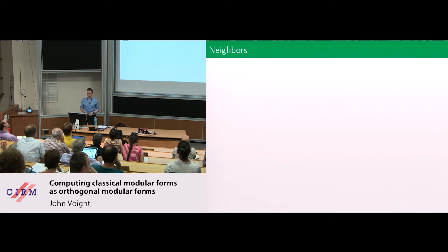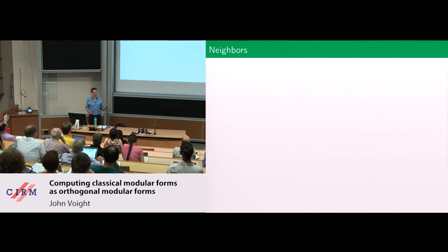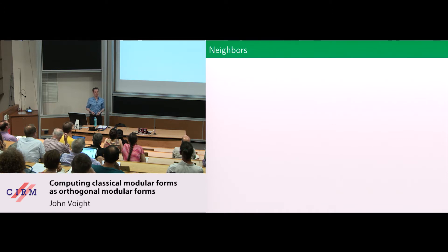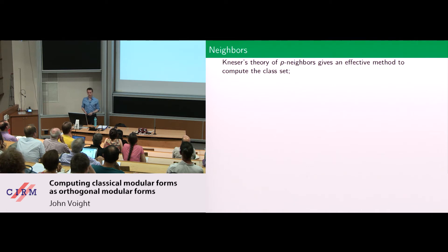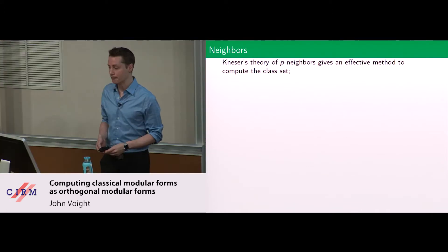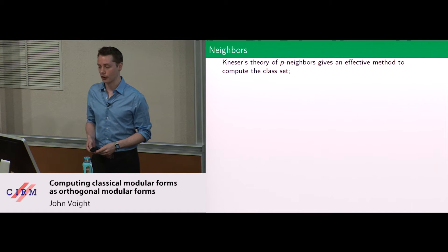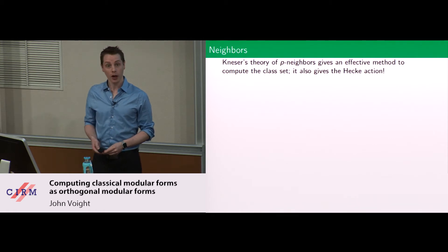The isometry class set is really going to be the basis of our Z-module where we're going to find our modular forms. How do you compute this class set? If I gave you a quadratic form, how are you going to find all the ones that are everywhere locally equivalent up to global equivalence? Both that question and how to produce Hecke matrices have the same answer: it's called p-neighbors. The theory of p-neighbors is due to Kneser, and it gives not only an effective method to compute the class set, it also gives the Hecke action.